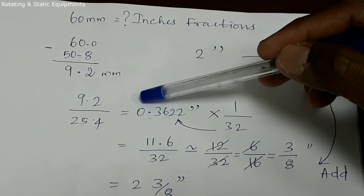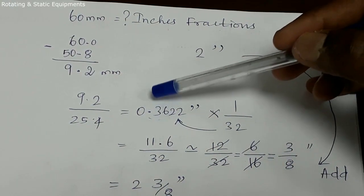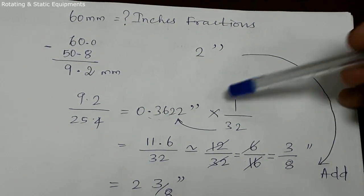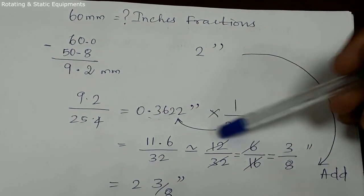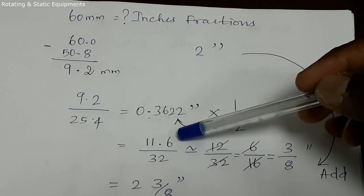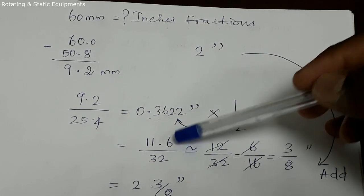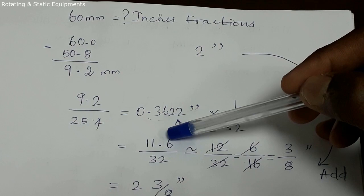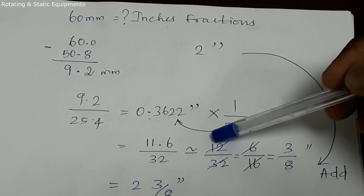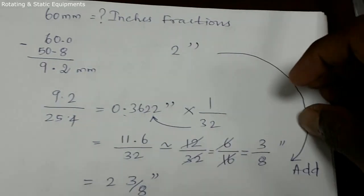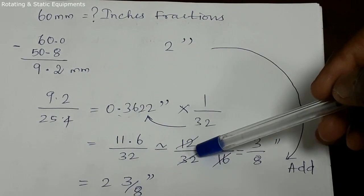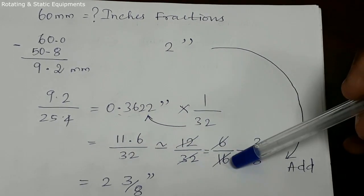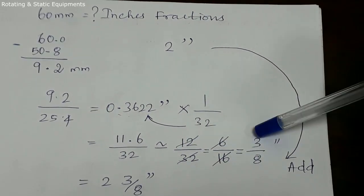The decimal value is 0.3622 inches. Multiply by 1 divided by 32, giving 11.6 divided by 32, which rounds to 12 divided by 32. That simplifies to 6 divided by 16, and further to 3 divided by 8.